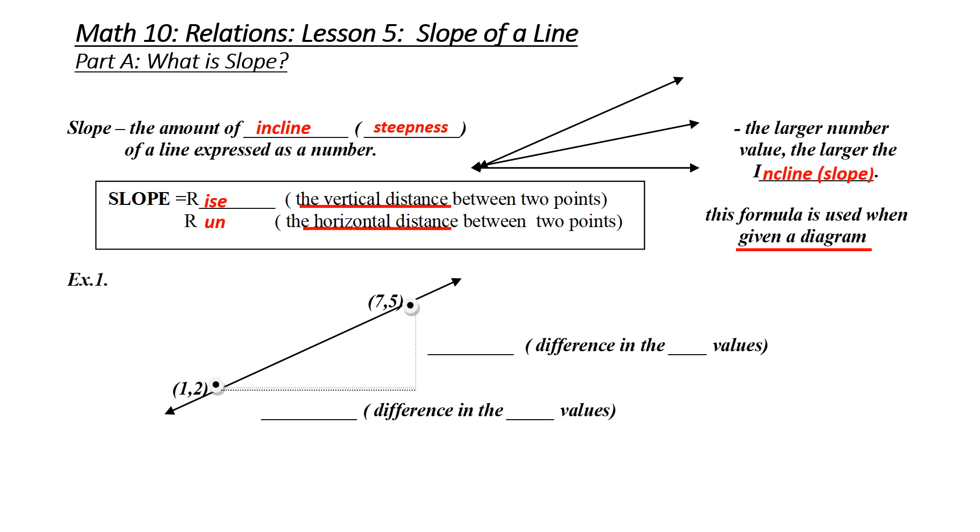Notice example one, we're given a diagram. How do I calculate my slope? First, I need to know my rise. My rise is my change in my y values. So, to go from 2 to 5, I went up 3. That is the difference in the y values.